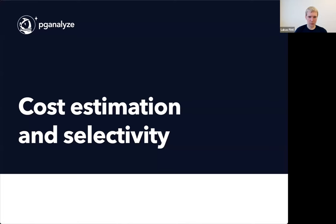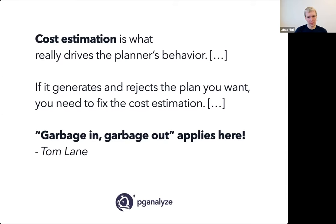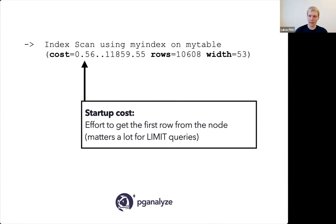Let's talk about one of the core aspects of what the planner does, leading into scan and join planning. The planner is ultimately driven by cost estimation. If the planner generates a plan but rejects it — meaning there is a good plan somewhere it didn't end up choosing — then what you need to fix is cost estimation. As Tom describes it: garbage in, garbage out. If you have bad cost estimation, you'll get a bad plan in many cases. The presentation will be about 45 minutes total, so we're about 10 minutes in with about 35 more to go.